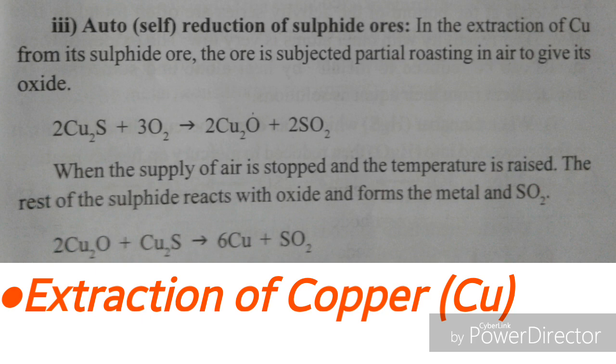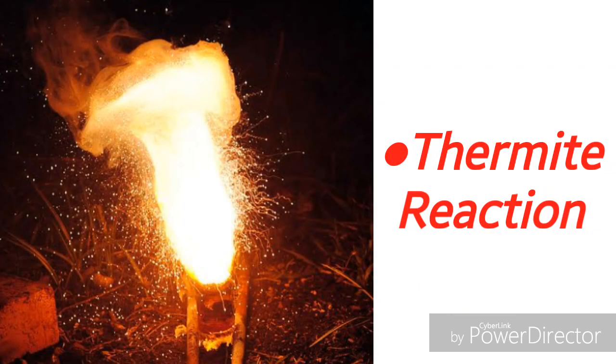In the extraction of copper from its sulfide ore, the ore is subjected to partial roasting in air to give its oxide. Cuprous sulfide reacts with oxygen to form cuprous oxide plus sulfur dioxide. When the supply of air is stopped and the temperature is raised, the rest of the sulfide reacts with the oxide: cuprous oxide reacts with cuprous sulfide to give copper metal and sulfur dioxide.